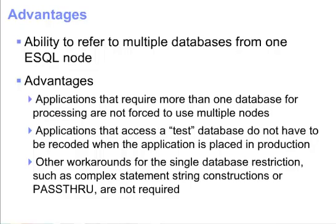Several advantages of accessing more than one database in a node are immediately apparent. Applications that require more than one database for processing are not forced to use multiple nodes. Applications that access a test database do not have to be recoded when the application is placed in production. Other workarounds for the single database access restrictions in previous releases, such as complex statement string constructions or pass-through, are no longer required.